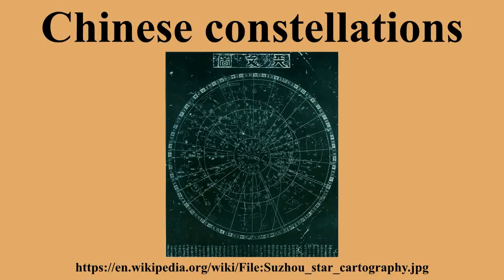From the viewpoint of the ancient Chinese, the Purple Forbidden Enclosure lies in the middle of the sky and is circled by all other stars. It covers the modern constellations Ursa Minor, Draco, Camelopardalis, Cepheus, Cassiopeia, Auriga, Boötes, and parts of Ursa Major, Canes Venatici, Leo Minor, and Hercules. The Supreme Palace Enclosure covers the modern constellations Virgo, Coma Berenices, Leo, and parts of Canes Venatici, Ursa Major, and Leo Minor.